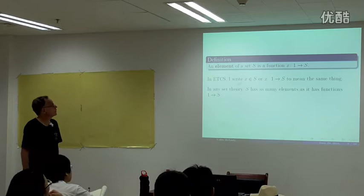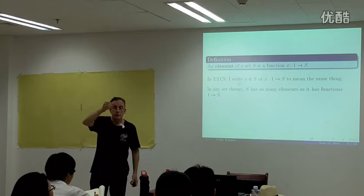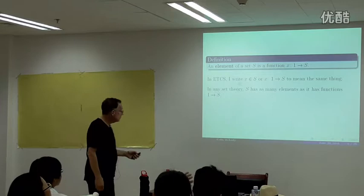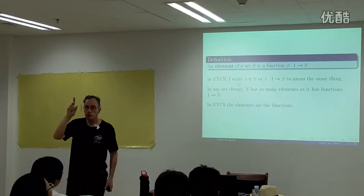In any set theory, a set has just as many elements as functions from 1, because each function from 1 is defined by picking one element. So no matter what set theory you subscribe to, a set has as many elements as there are functions to it from a singleton. In ETCS, the elements are the functions. We've selected a singleton, and we'll be talking about the same one all the time.